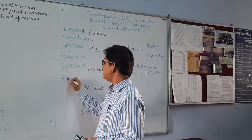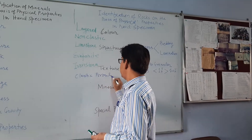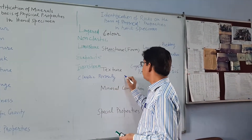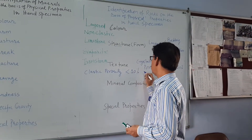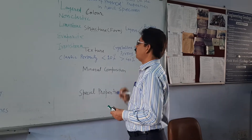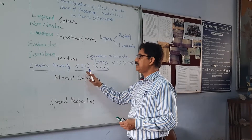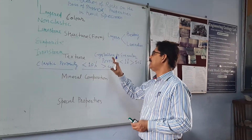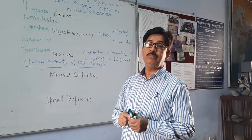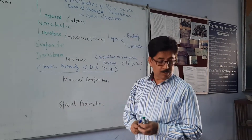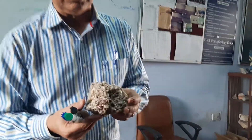Both extremes are there in the case of non-clastic rocks. In the case of clastic sedimentary rocks, porosity varies — it can be less than 10 percent to more than 40 percent. Theoretically all sedimentary rocks are porous. Clastic sedimentary rocks have more porosity as compared to non-clastic rocks, but it varies from sample to sample.